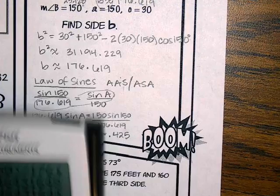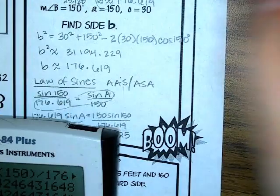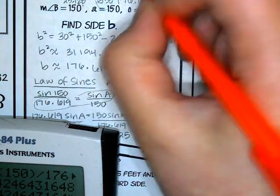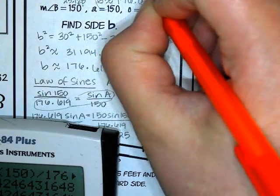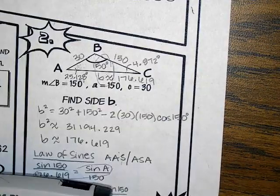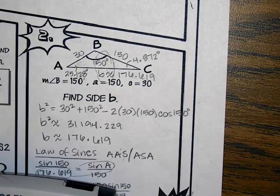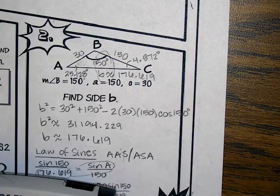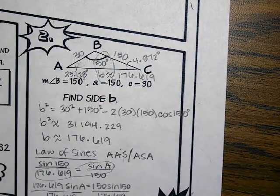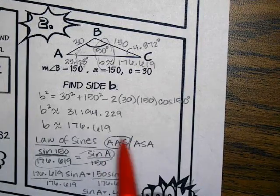This is 4.872. We solved it. And in here I'm just going to circle this — angle-angle-side — to show that this is the information I had when I did the law of sines.